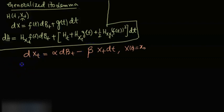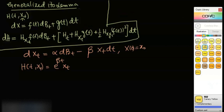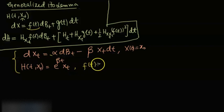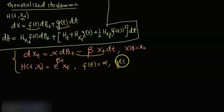What I'm going to do is consider a function h = e^(βt)·X(t), and apply the Itô lemma to it. For this process, we can identify that f(t) — the coefficient of dB(t) — is α, and g(t) — the drift coefficient — is −β·X(t).